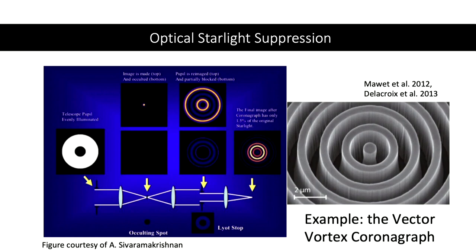Next step is to get the contrast we need. We can use a coronagraph. Again, there are tons of different architectures. This is the classical Lyot coronagraph. It has a simple part and a complicated part: you take an image of your star and put a disk in front of it, then defocus, go into the pupil plane, and use the Lyot stop to clean up your telescope diffraction pattern. Combining this, you can remove 99% of the incoming starlight.